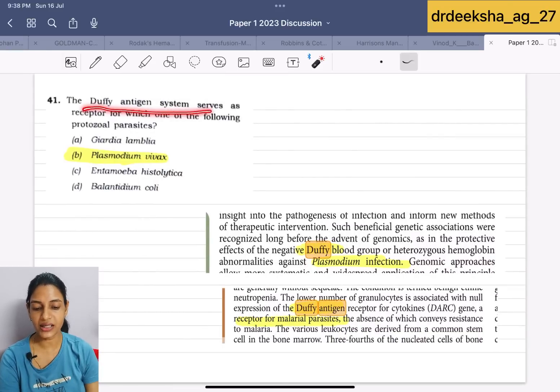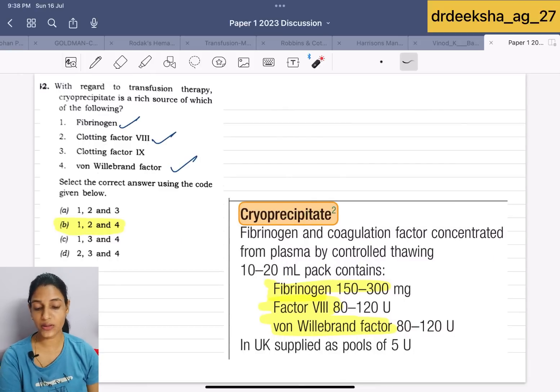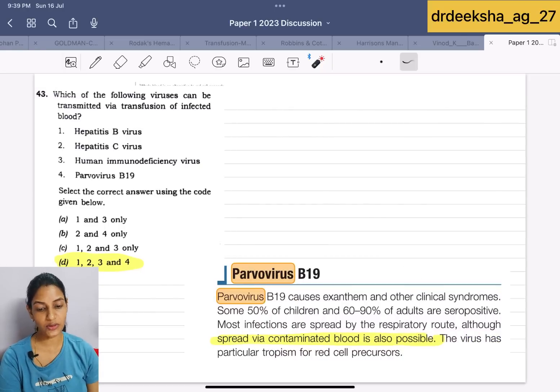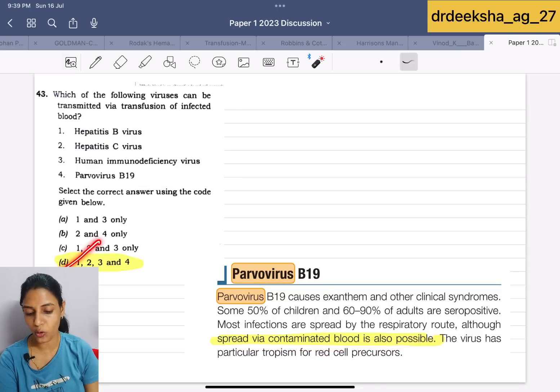Next question they are saying is that the Duffy antigen system serve as the receptor for which of the following protozoal parasite? We all know it is the Plasmodium vivax. Next question is with regard to the transfusion therapy cryoprecipitate is a rich source of which of the following. Cryoprecipitate contains fibrinogen factor 8th and von Willebrand factor. Answer is fibrinogen 8th von Willebrand factor, 1, 2 and 4. Next question they are saying is which of the following virus can be transmitted by transfusion of infected blood. We all know hepatitis B, C, HIV can be transmitted where parvovirus B19 also can be spread by contaminated blood. All 4 are correct.